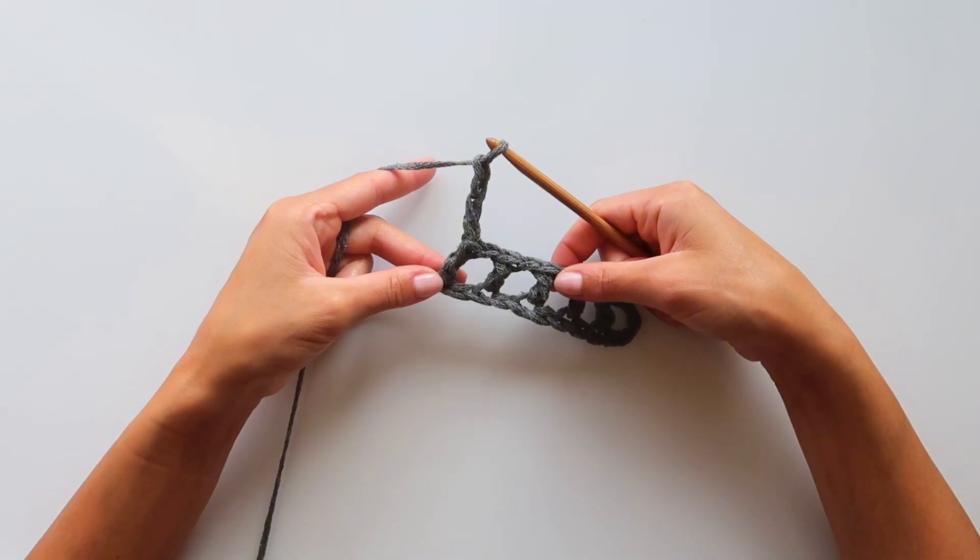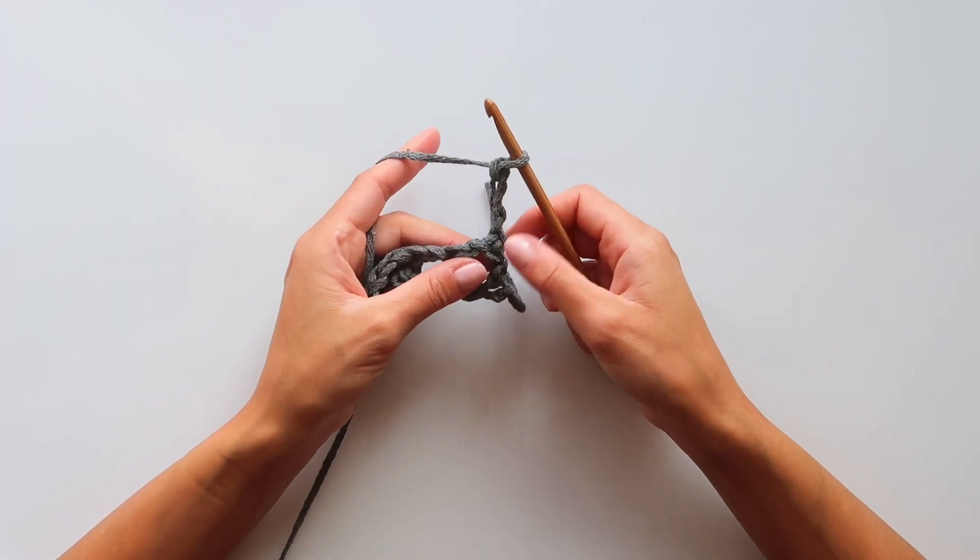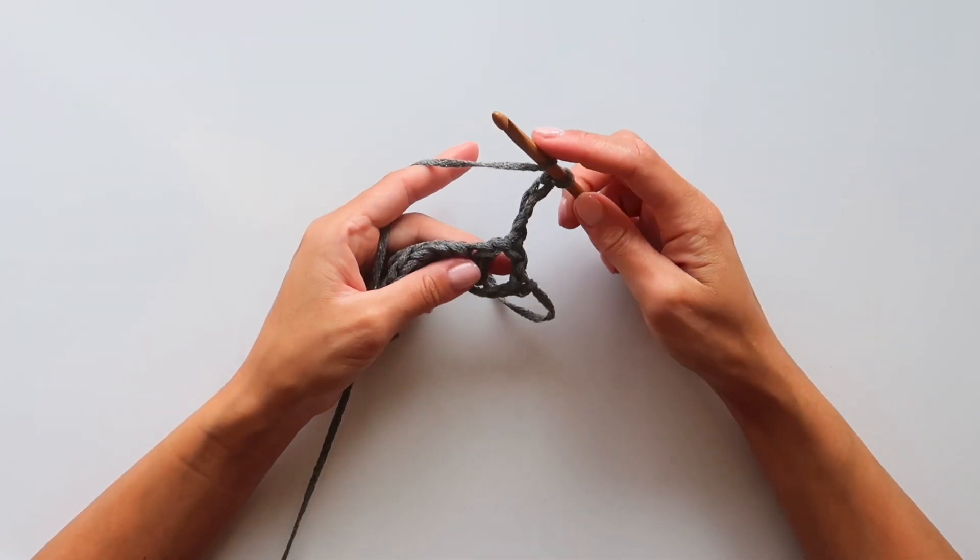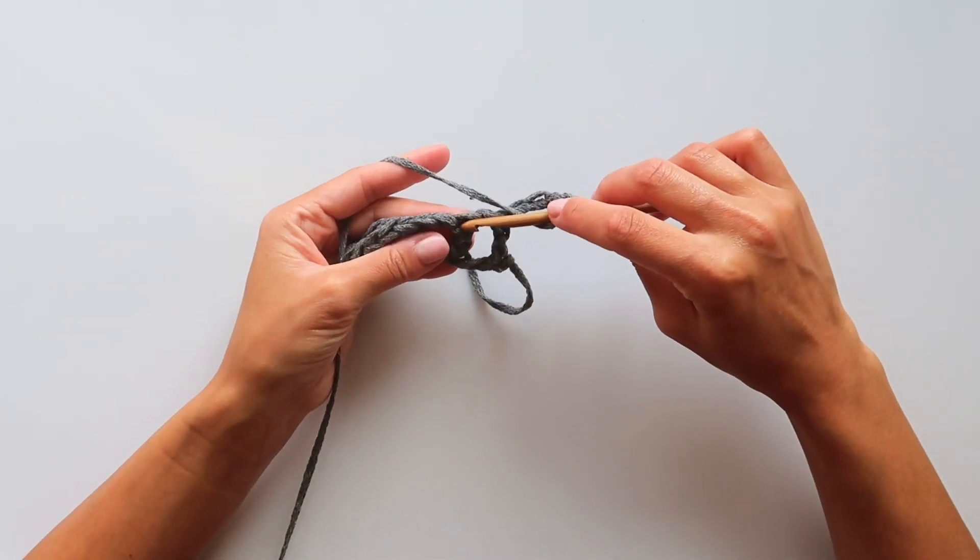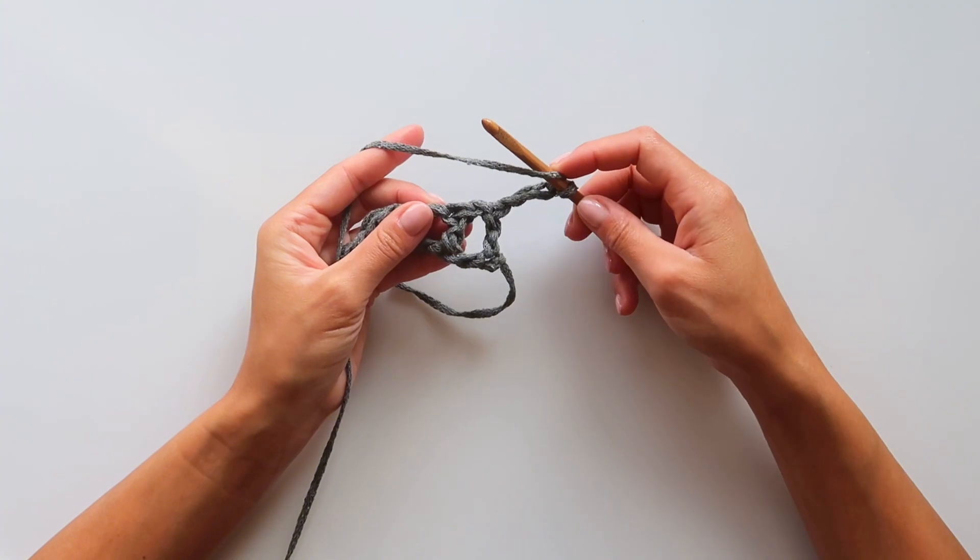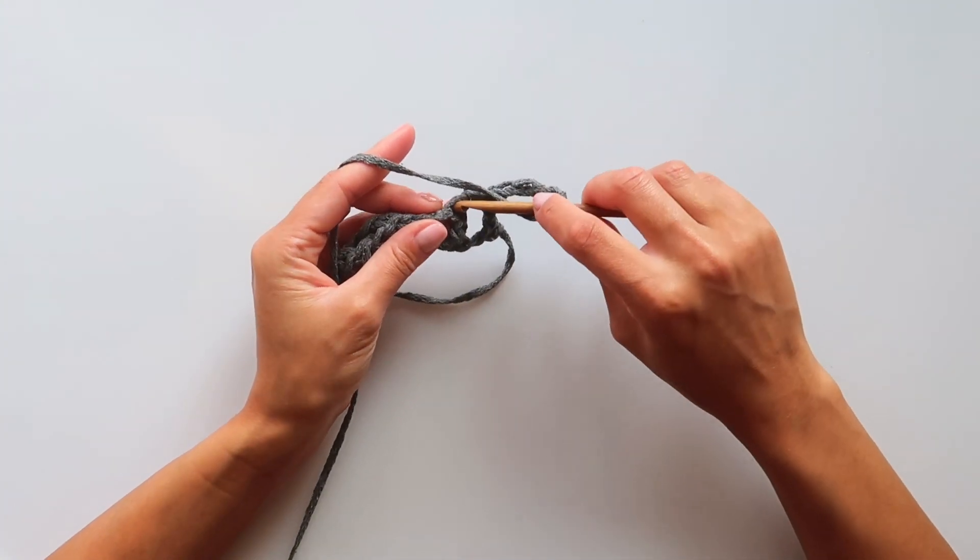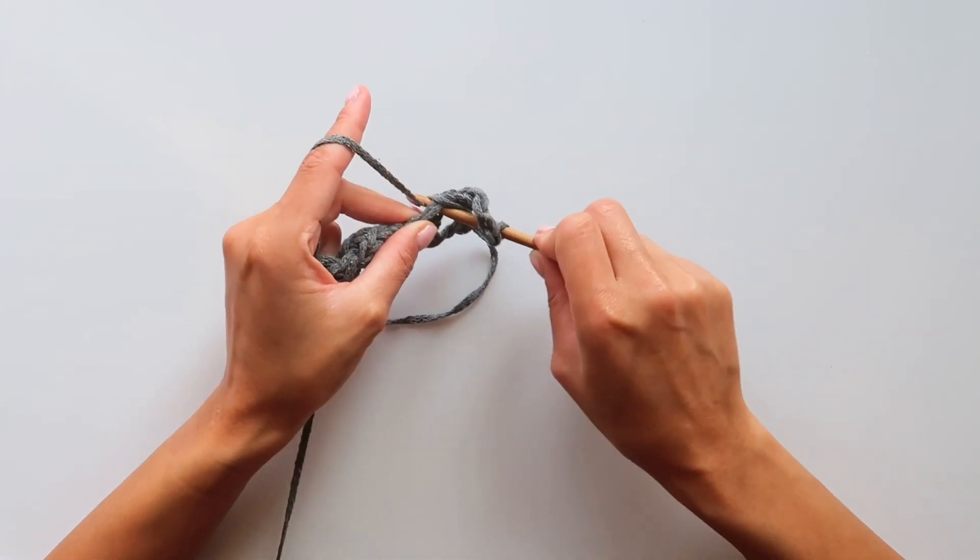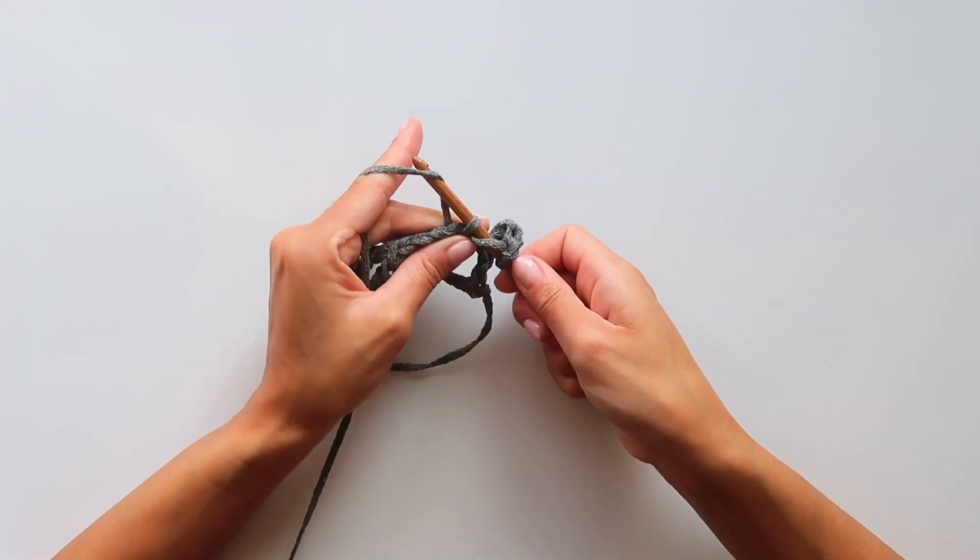Four chain stitches, then turn and make the first double crochet in the top of the previous row double crochet.